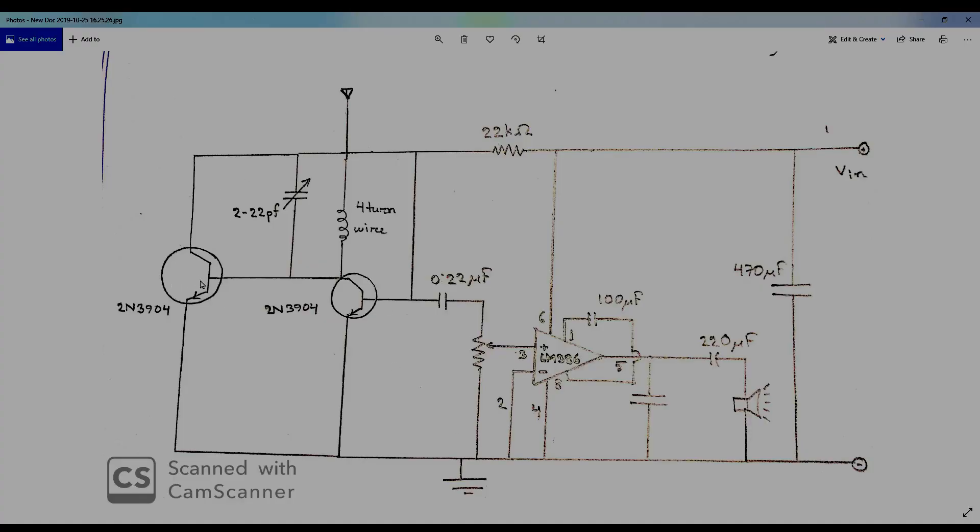We have used two BGTs which are 2N3904. The BGTs will help us catch the signal using this variable capacitor and this inductor. After that, the signal will pass through this route and go through this LM386 IC which amplifies the signal.